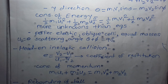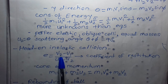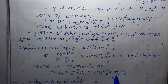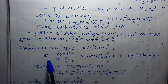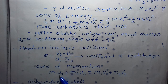The coefficient of restitution e equals (v2 − v1) / (u1 − u2). The conservation of momentum equation also applies. If e is provided, we have one more equation, and by solving these two equations together we can find the two unknowns v1 and v2.